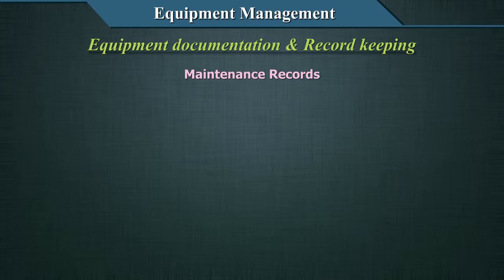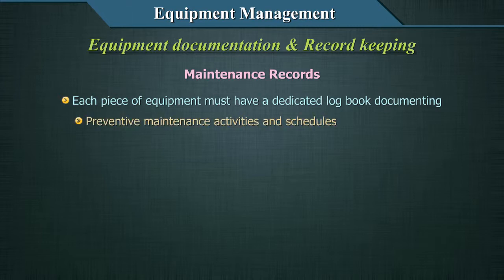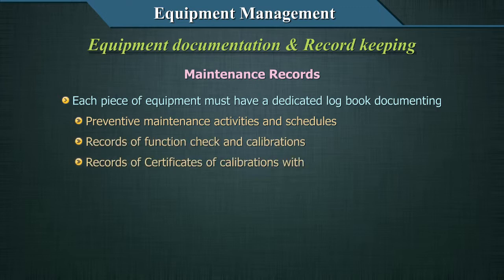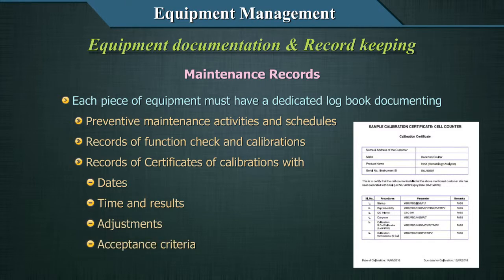Maintenance records should include a dedicated logbook for each piece of equipment documenting all characteristics and maintenance elements. This includes preventive maintenance activities and schedule, recording of function checks and calibration, and performance records including copies of reports or certificates of all calibrations and/or verifications, including dates, times, results, adjustments, acceptance criteria, and the due date of the next calibration and/or verification.